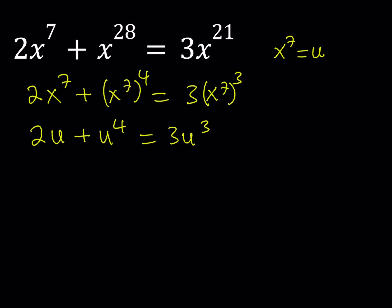Now I'd like to put everything on the same side and make it a standard quartic. This became a quartic equation, which is obviously easier to solve — much easier than an unvigintic, right? So we get: u to the 4th power minus 3u cubed plus 2u is equal to 0.